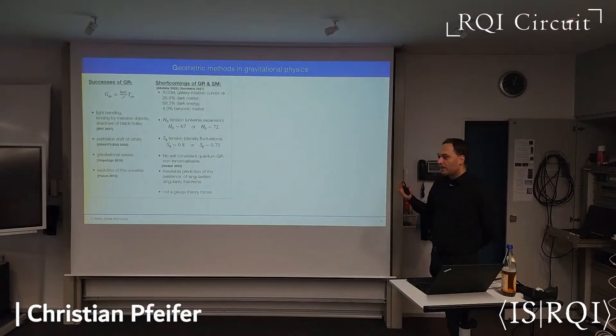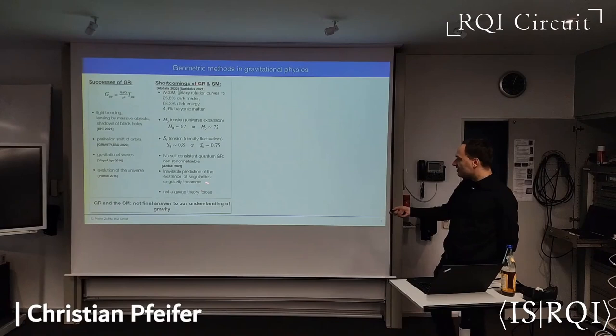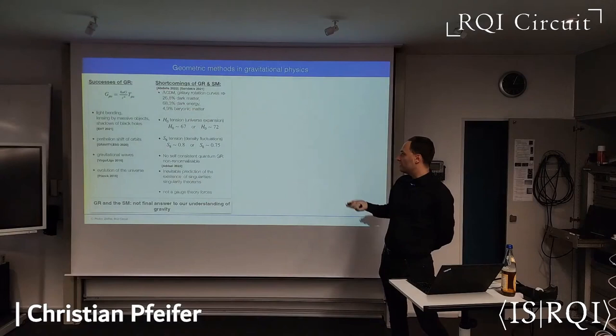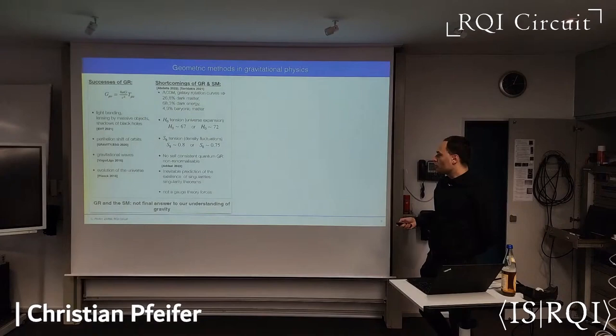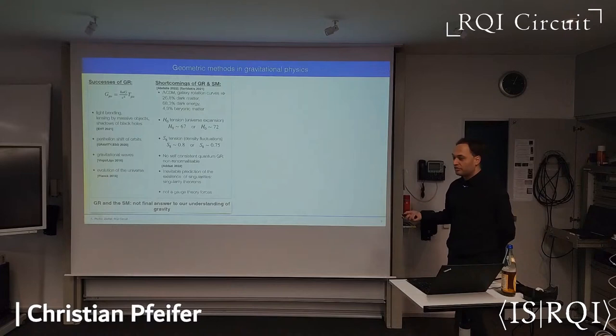Concluding this, it's fair to say that general relativity and the standard model of particle physics, together with cold dark matter and the cosmological constant, is not yet the final understanding of gravity. There are two communities in physics: people who think the main correction must be on the side of the standard model, introducing new particles, and others looking at modifications of the geometry of space-time.